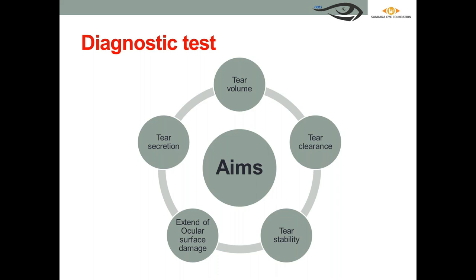Diagnostic tests for dry eye aim to measure tear secretion, tear volume, tear clearance and drainage, tear film stability, and the extent of ocular surface damage. A combination of tests is preferred, as no single gold standard exists for diagnosing dry eye.